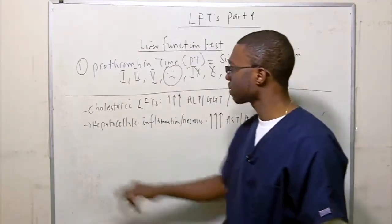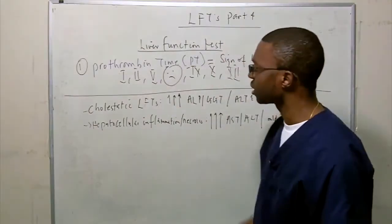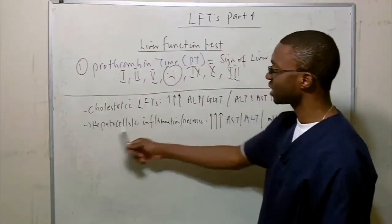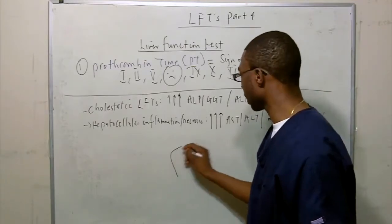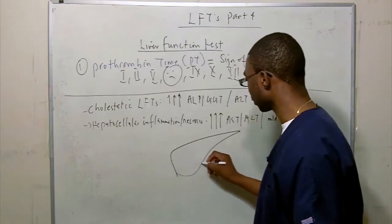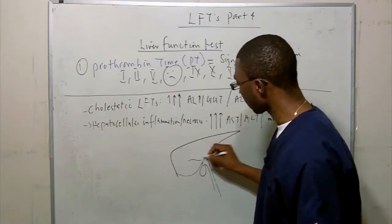So just to kind of summarize, I kind of wrote these two points down here. There's cholestatic LFTs and there's hepatocellular inflammation. So if you look at the liver, like we said earlier, got the gallbladder coming out of it.